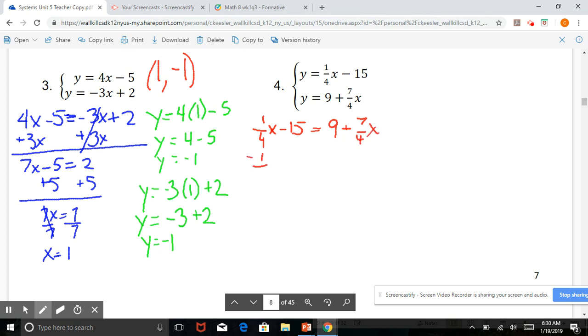I'm going to start by subtracting 1 4th because I know that is less than 7 4ths. That leaves me with negative 15 equals positive 9 plus 6 4ths, which reduces to 3 halves of x. Subtract 9.